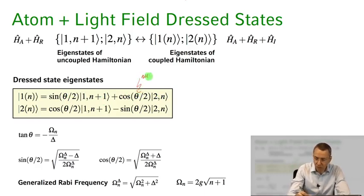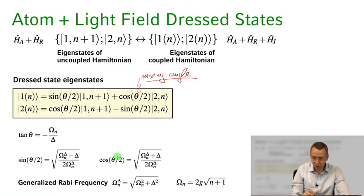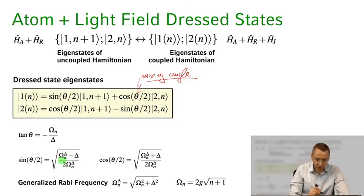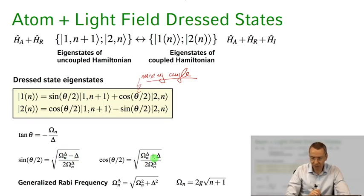This theta is the so-called mixing angle in the system, determined by the ratio of the Rabi frequency to the detuning. The coefficients sin(θ/2) and cos(θ/2) have simple relations connected to the generalized Rabi frequency — which is the square root of the resonant quantized Rabi frequency squared plus the detuning squared — giving us a very simple expression for the new eigenstates of the coupled Hamiltonian.